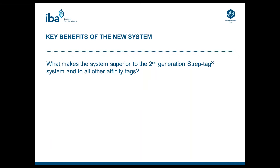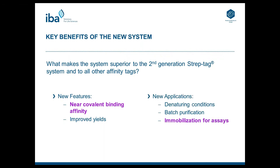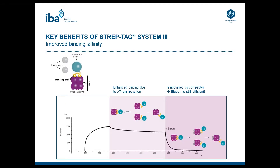The second part of this talk deals with the benefits of Streptactin XT and what makes the system superior to the second generation Streptactin system and to all other affinity tags. On one hand, it has new features — Streptactin XT has a near-covalent binding affinity for Twin Streptag, and with this, higher protein yields can be purified. On the other hand, it can be used in new applications, including purification under denaturing conditions, batch purification, and immobilization for assays.